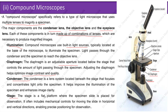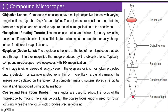The stage is a flat platform where the specimen slide is placed for observation; it often includes mechanical controls for moving the slide horizontally and vertically for precise positioning. Compound microscopes have multiple objective lenses with varying magnification — for example, 4x, 10x, 40x, and 100x — positioned on a rotating turret or nosepiece for capturing the initial magnification. The nosepiece allows easy switching between objective lenses, eliminating the need to manually change them for different magnifications.